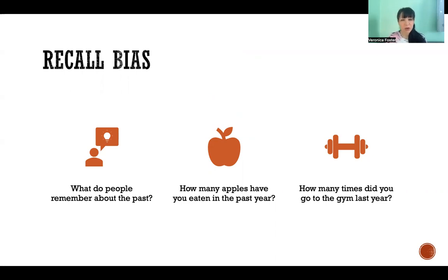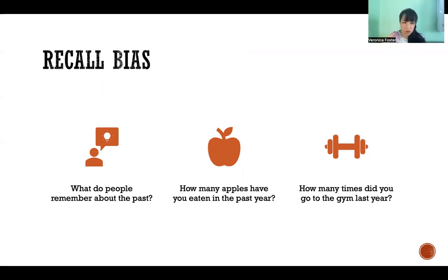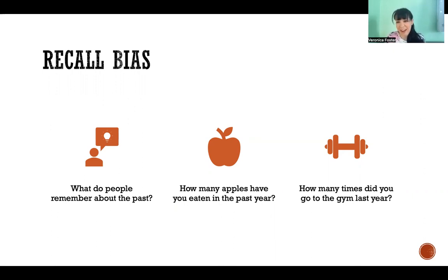Human memory is notoriously inaccurate. We are very bad at remembering things correctly, especially if we aren't necessarily paying attention to the fact that we'll need to remember it. There's a big difference between remembering something that you intentionally tried to remember versus something you didn't know at the time you would need to remember in the future. So research studies need to be designed so that we are not depending on people's memory, because we are just not that great at remembering things unless we do it on purpose.